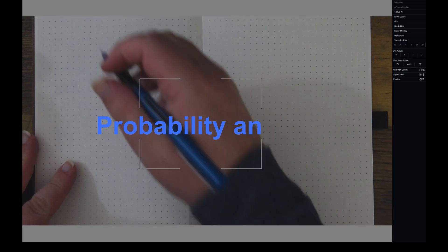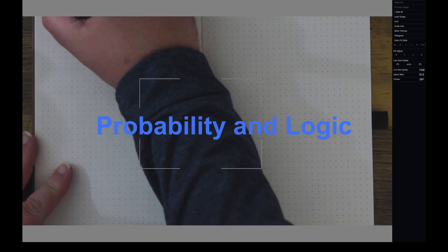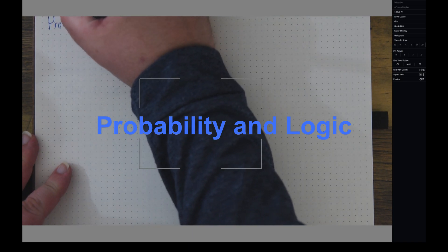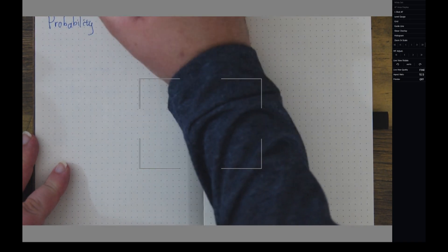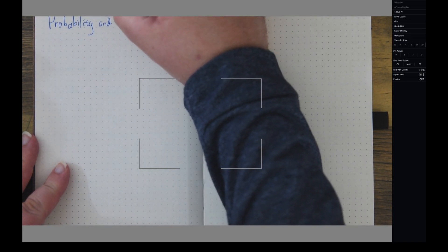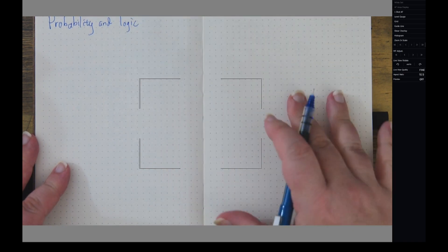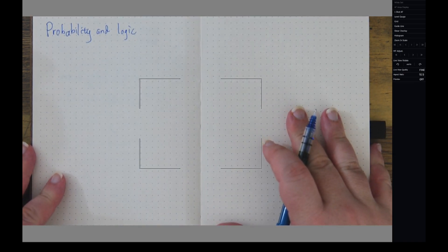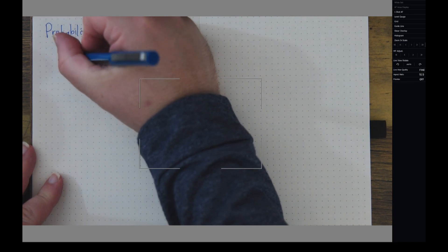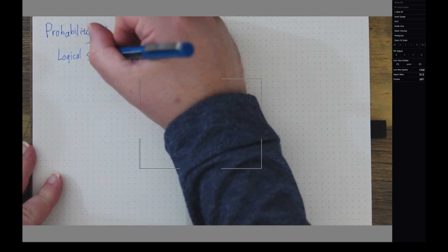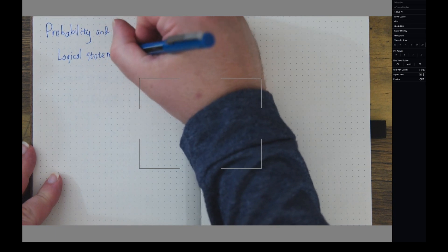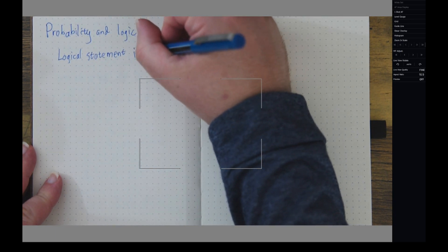So what I want to talk about today is probability and logic. Now let's start with logic, since you can think of probability as an extension of logic. So when I talk about a logical statement, I mean a statement which is either true or false.